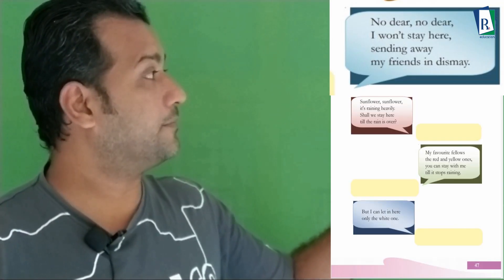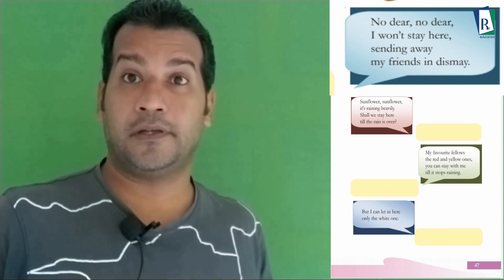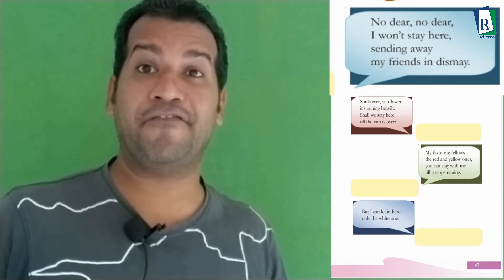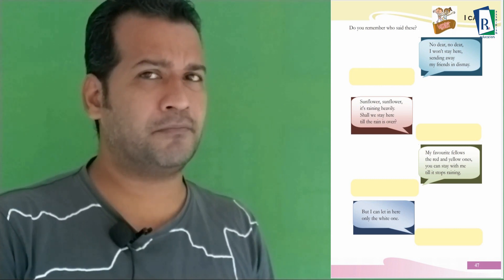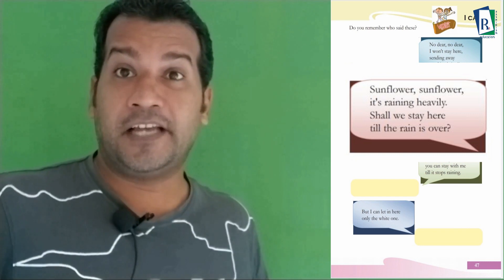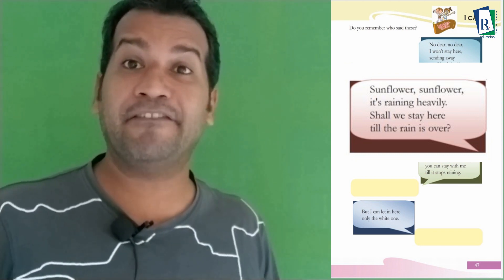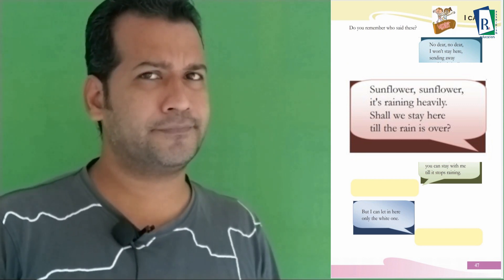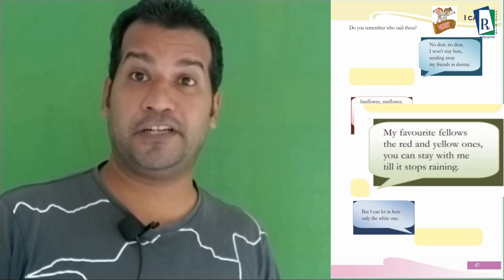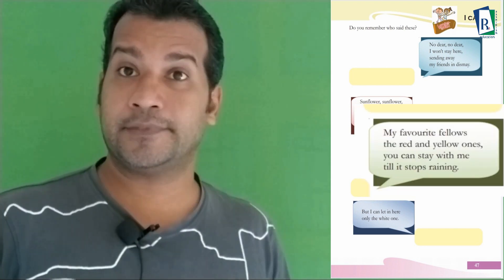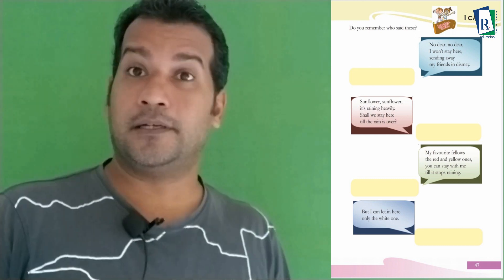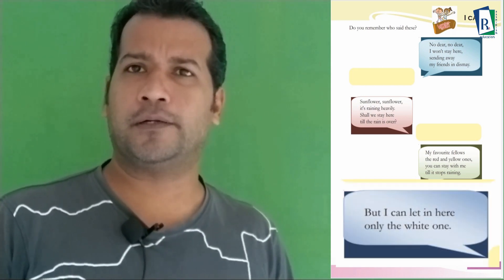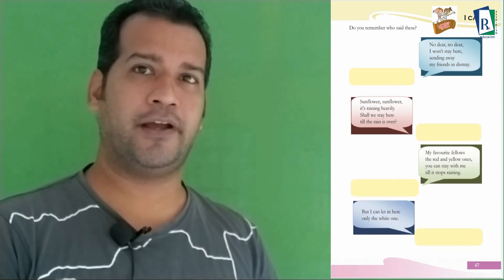Next task: read these notes and identify who said each line. First: 'I won't stay here, sending away my friends in dismay' — who told this? Find it from the lesson. Next: 'Sunflower, it is raining heavily, shall we stay here till the rain is over?' — who said this? Then: 'My favorite fellows, the red and yellow ones, you can stay with me till it stops raining.' And lastly: 'But I can let in here only the white one' — who told this? Read the lesson and you can find it easily.